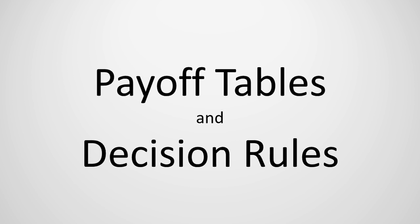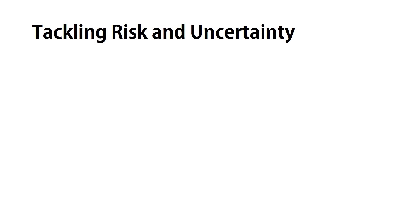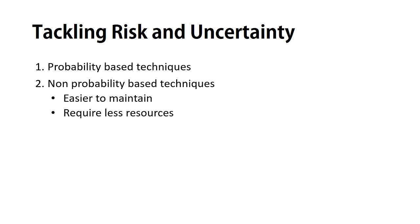Hi, I am Hassan Fazal and today we are discussing payoff tables and decision rules. Risk and uncertainty add a layer of complexity and complication to the decision-making process. In order to manage risk and uncertainty, we use different decision-making techniques that are either probability-based or non-probability-based. Non-probability-based techniques are much easier to maintain as they require less information, fewer resources, and are generally less complex and easier to understand.